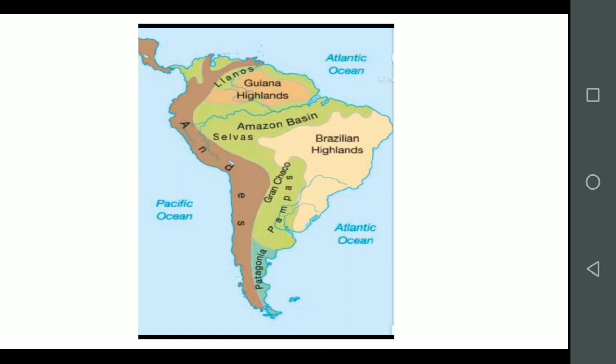In the north, the Orinoco plains are referred to as Llanos, which means plains in Spanish. South of the Llanos, the Amazon lowlands are called the Selvas — a region of dense equatorial forest. Further south, the temperate grassy plains of Argentina are called the Pampas. The Parana-Paraguay lowlands include the Grand Chaco, a vast region which is not drained well and becomes marshy during the rainy season.